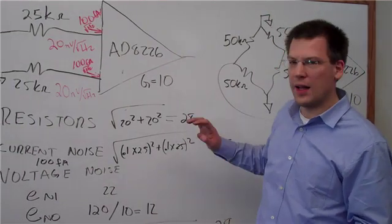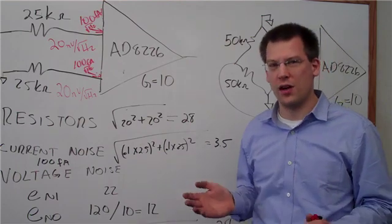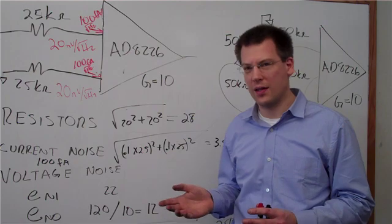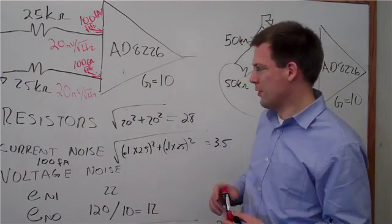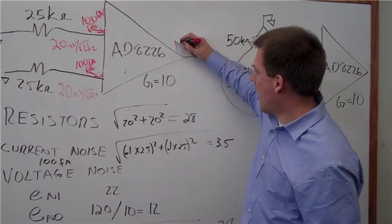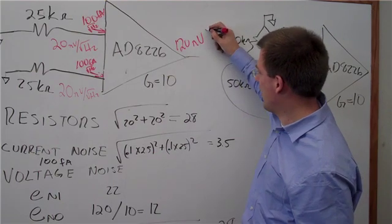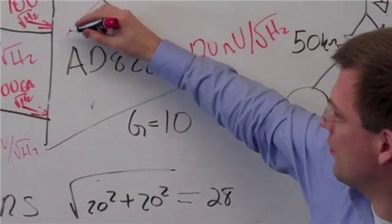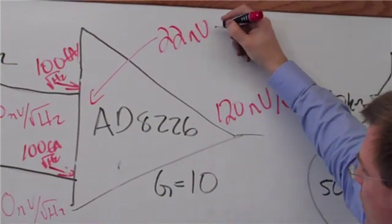The next step is to calculate the voltage noise of the instrumentation amplifier. An instrumentation amplifier is a little bit strange compared to a standard op amp in that they typically have two noise specs. They've got a noise spec at the output, so our ENO is 120 nanovolts per root hertz, and our input noise is 22 nanovolts per root hertz.